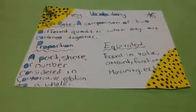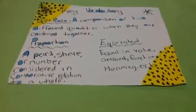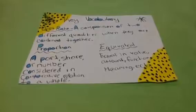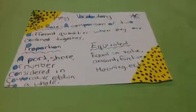Key vocabulary. Unit rate: A comparison of two different quantities when they are combined together. Proportion: part, share, or number considered in comparative relation to a whole. Equivalent: Equal in value, amount, function, meaning, etc.